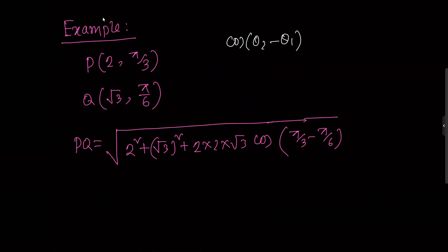For the cosine term, I have theta2 minus theta1. Note that cosine of theta1 minus theta2 equals cosine of theta2 minus theta1, because cosine of minus theta equals cosine theta. So I can write it either way.